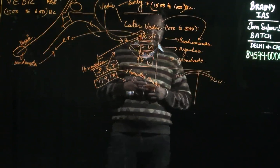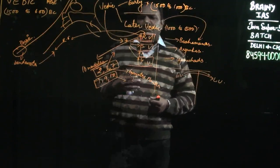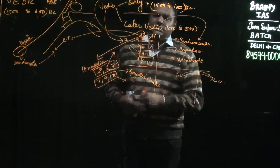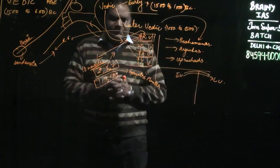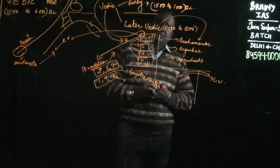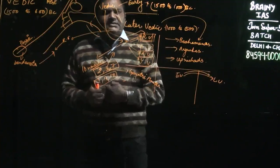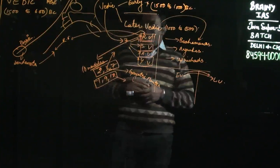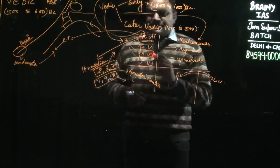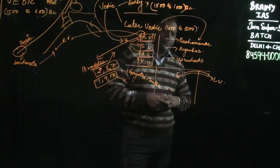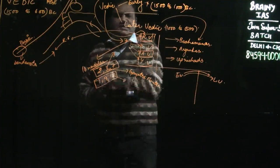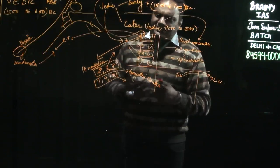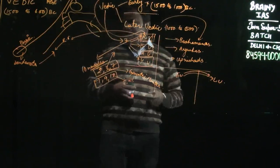Rigveda has only mantras. Apart from it, Samaveda tells how mantras of Rigveda are to be sung. It is the musical part of Rigveda. If you want to trace back the history of Indian music, you can trace it from Samaveda. Atharvaveda is important for spells and charms, and at the same time we have mention of medicinal plants. You can associate Atharvaveda with Ayurveda.